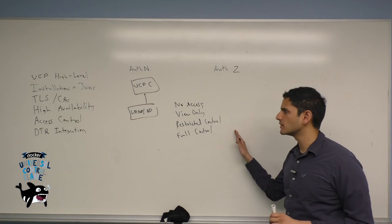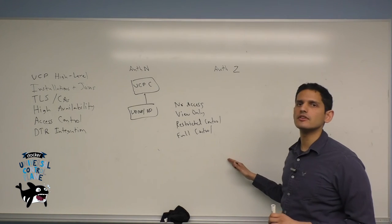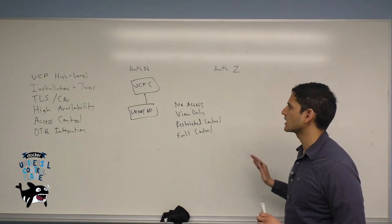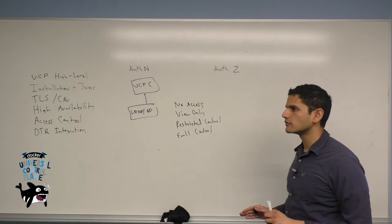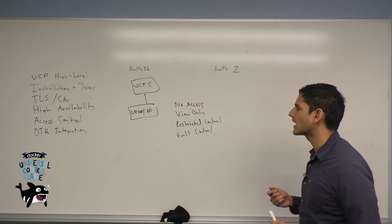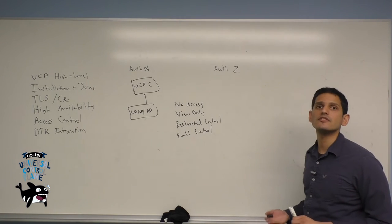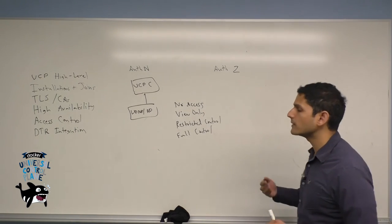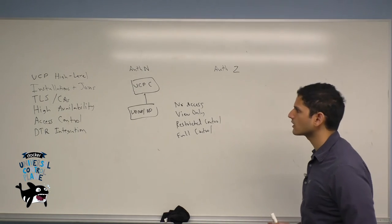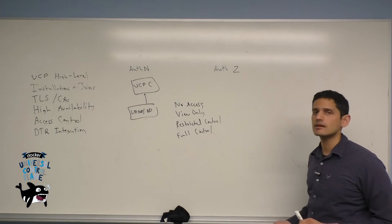Restricted control means that you have almost all the abilities that you have in full control, but you're restricted from being able to do certain activities that you wouldn't want in a production-grade environment. For example, you're not allowed to exec into containers, or you're not able to access kernel-level functions using things like privileged containers. This might be more appropriate for people in an operations focus who need to run containers in production, but may not want to be able to edit them midstream.